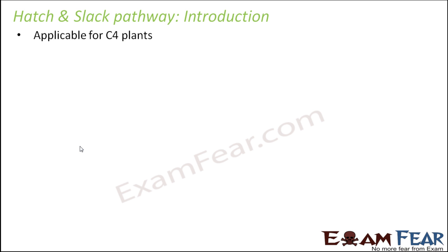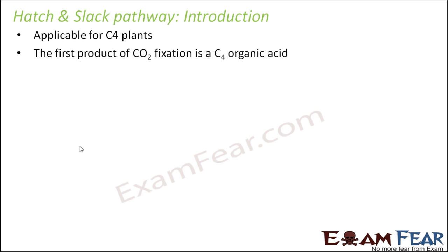This pathway is applicable only for C4 plants. The C3 pathway is applicable to all photosynthetic plants, so all photosynthetic plants synthesize their sugar by the C3 or Calvin cycle. But the C4 pathway applies only to C4 plants. The first product of carbon dioxide fixation in this pathway is a C4 carbon organic acid, which is why it is called the C4 pathway.